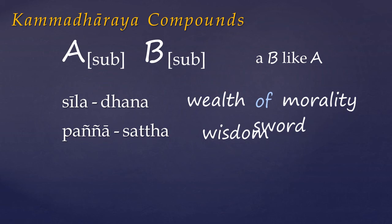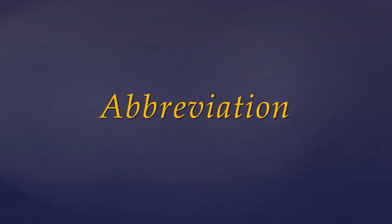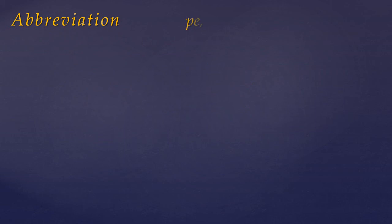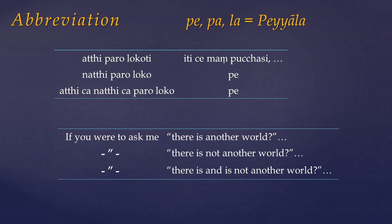In English we're much more likely to say moon face or star-eyed. And sometimes members of this group are rendered as tappurisas — for instance, wealth-like morality may be better rendered as wealth of morality, and sword-like wisdom as the sword of wisdom. With the exception of this last group, which can be a bit counter-intuitive, the meaning of the kamadharaya is usually quite self-evident. And so we come to the final brief section that Warder entitles abbreviation. The particles pe, pa, or la are all abbreviations of peala, which simply means ditto or etc. Because the canonical texts are highly repetitive, when there are only minor changes between one passage and the next, pe is used to indicate that a passage has to be repeated but with the following words substituted — the same as we use the ditto in English. This was probably a signal to the person reciting the text out loud to fill in the missing parts themselves.